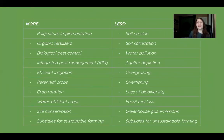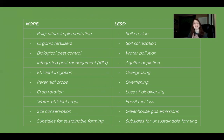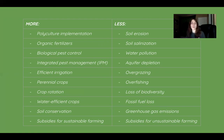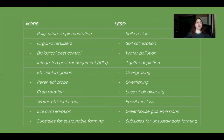For sustainable agriculture, we need more polyculture — a diverse array of crops for more genetic variation. We need more organic fertilizers to supply nutrients back into the soil, more biological pest control using what we already have, and integrated pest management (IPM), a sustainable approach to reducing pests without synthetic pesticides.